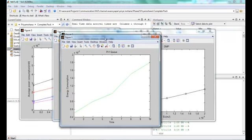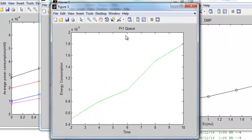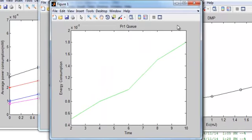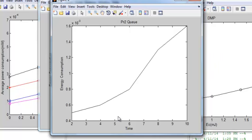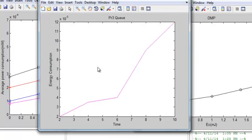Figure one shows time versus energy consumption of the PR1 queue data. Figure two shows energy consumption versus time for the PR2 queue data, and figure three shows the PR3 queue data. We have divided the ready queue into three queues.